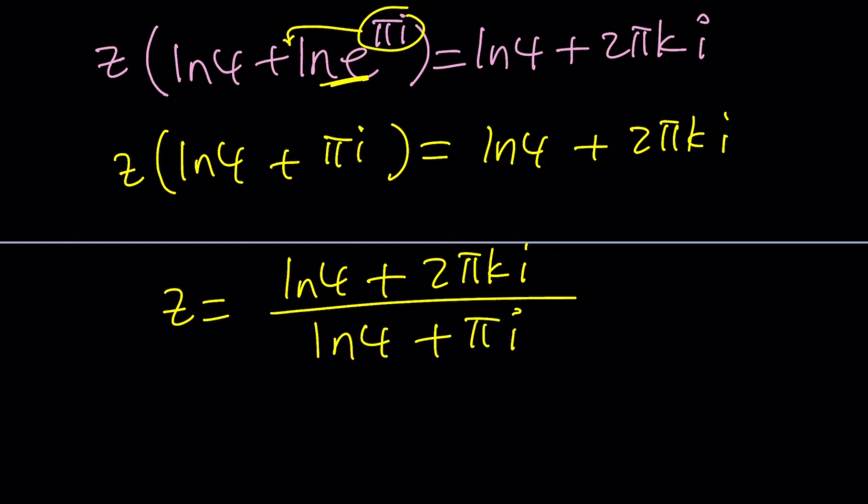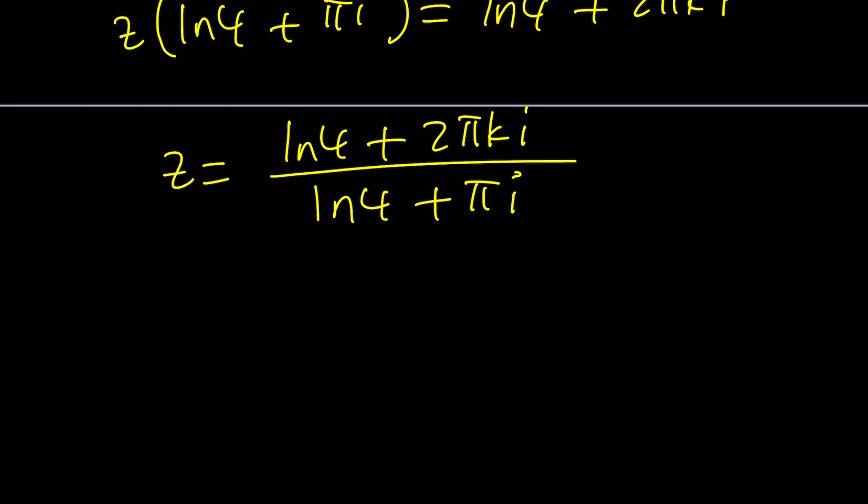Now, this reminds me of something. If k equals 1 half was allowed, think about it, then z equals 1 would be a solution, right? Think about it. Replace k with 1 half, and you'll get 1.